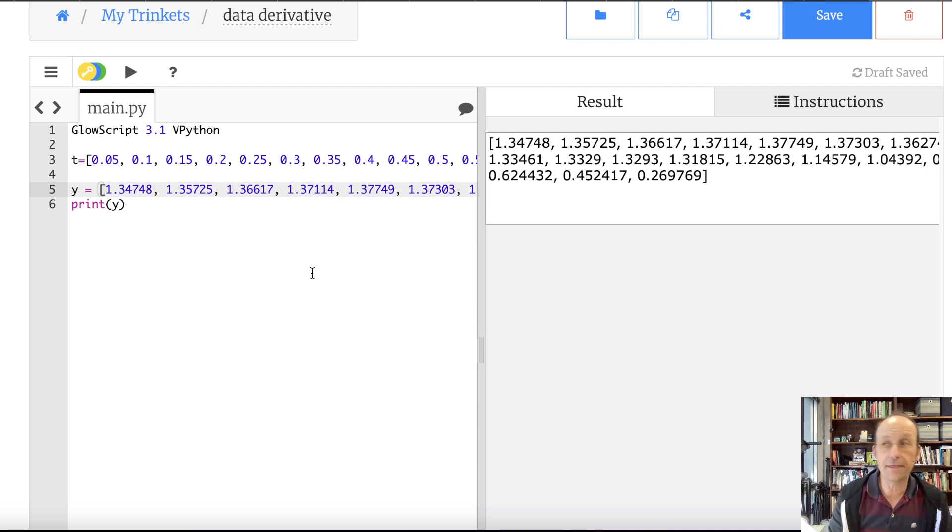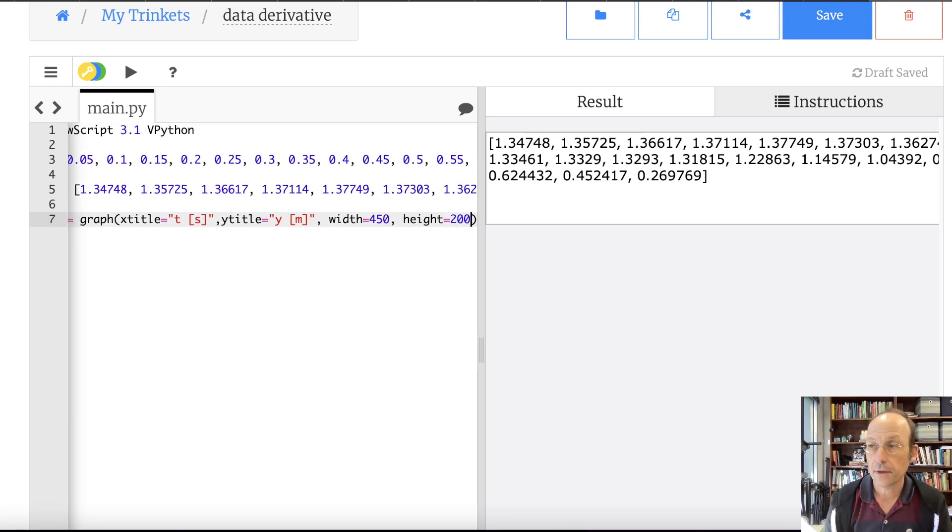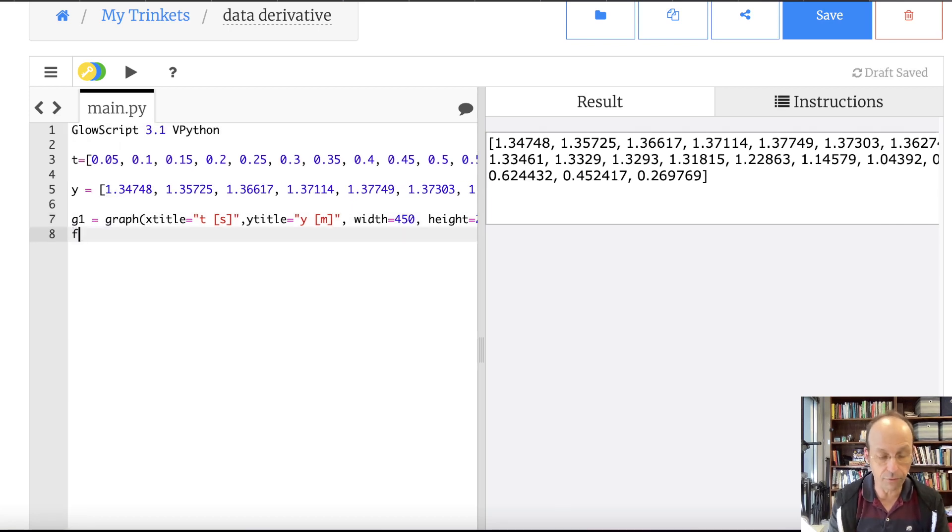Let's do the first thing. I just want to plot the data. Let's just plot the data just to make sure that we know what's going on. First, I've got to make a graph. G1 equals graph. X title equals T in seconds. Y title equals Y in meters. And then I will say width equals 450 and height equals 200. That way it will fit on the screen the best. Now, I can make a graph. I'm going to call this FY equals G dots. I usually use G curve. G dots just put data points there. Color dot blue.